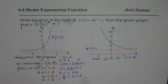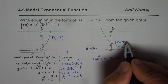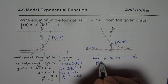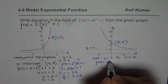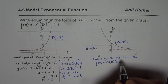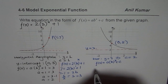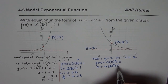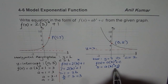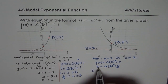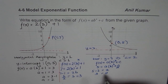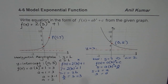Next, check the y-intercept. The y-intercept is (0, 5). Substituting into f(x) = a·b^x + 2: with x = 0 and f(0) = 5, we get 5 = a·b^0 + 2, so a = 5 − 2 = 3. The vertical stretch is by a factor of 3.